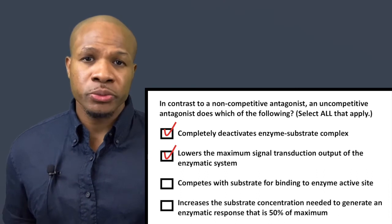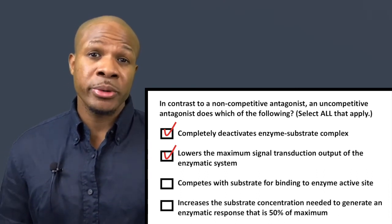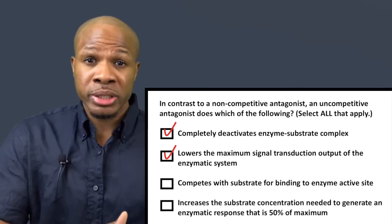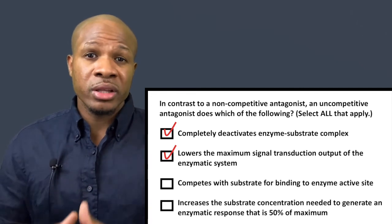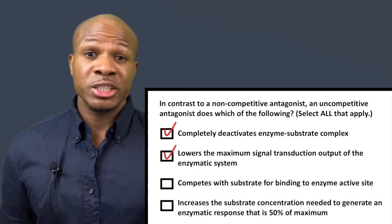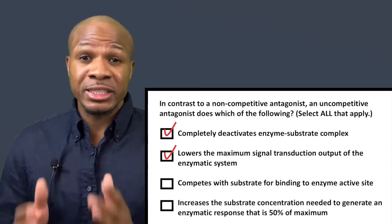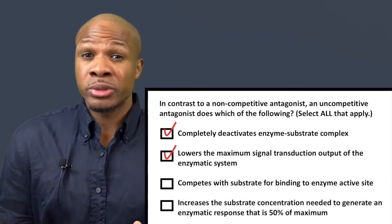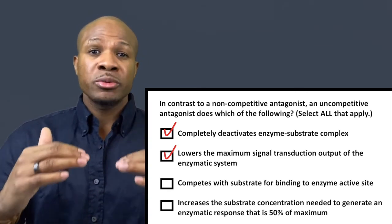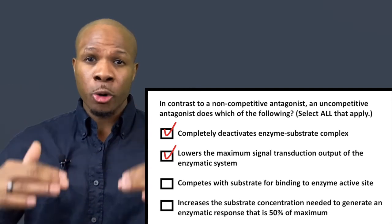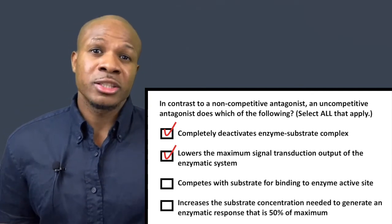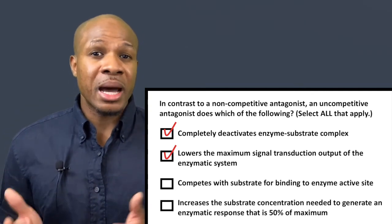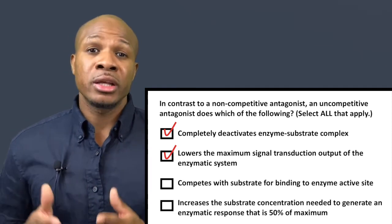Answer choice D says an uncompetitive antagonist increases the substrate concentration needed to generate an enzymatic response that is 50% of maximum response. That is not true. Because the uncompetitive antagonist destroys a portion of the enzymes in the system, fewer enzymes are left to generate output. With a lower maximum output, it takes less substrate — not more — to generate 50% of that maximum. So answer choice D is incorrect. The correct answers are A and B.